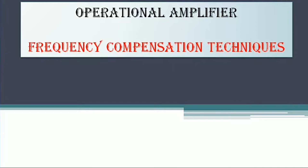In the previous video we have seen what stability is and how it is applicable for the operational amplifier. If you observe the internal circuit of an operational amplifier in detail — considering the BJT version — we have a number of capacitors internally. Because of these capacitors, there exists instability in the circuit. In order to convert that instability to stability, we use the frequency compensation technique.